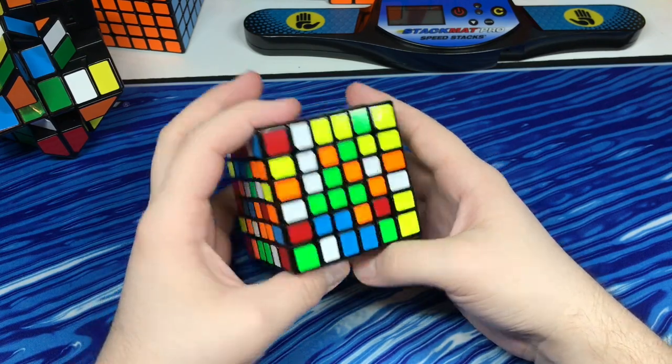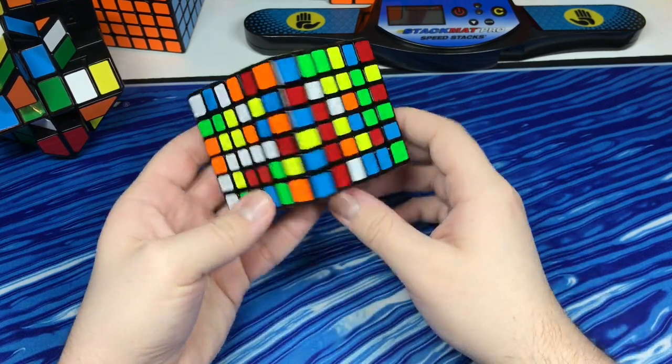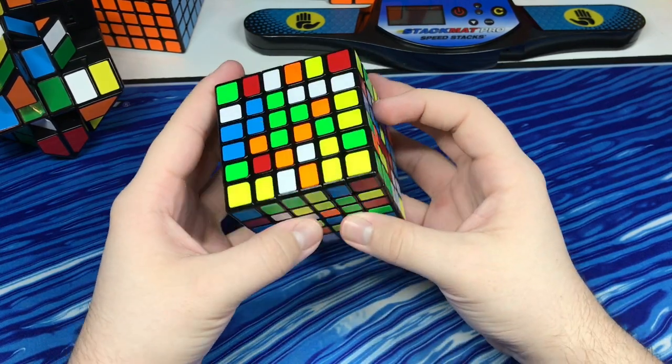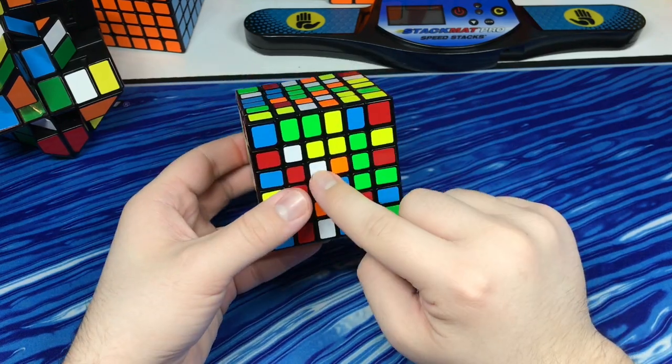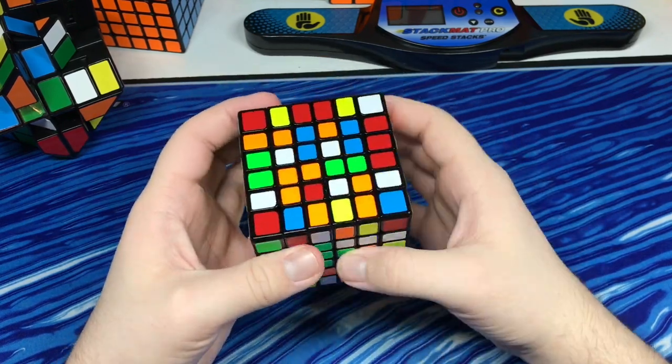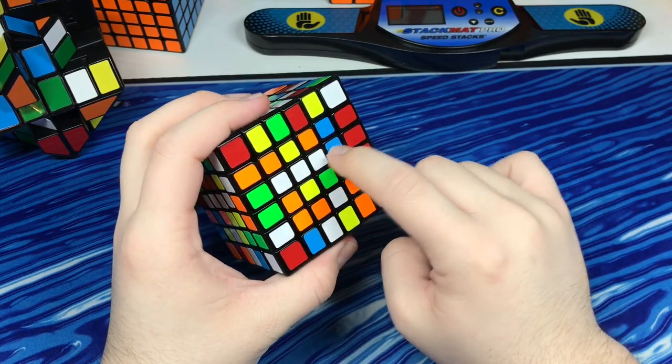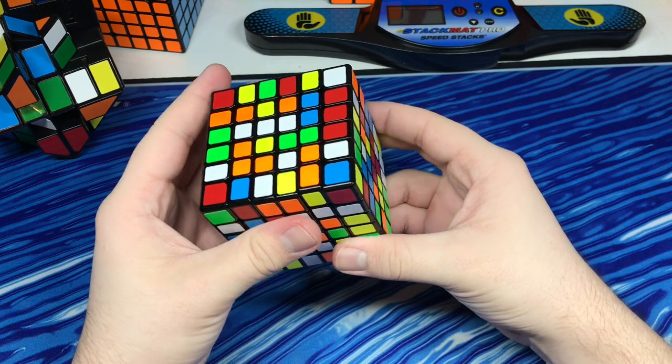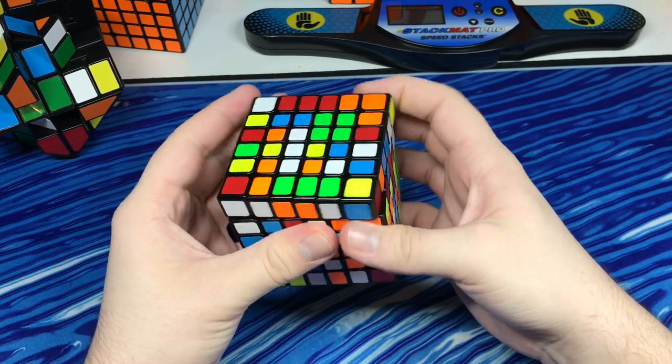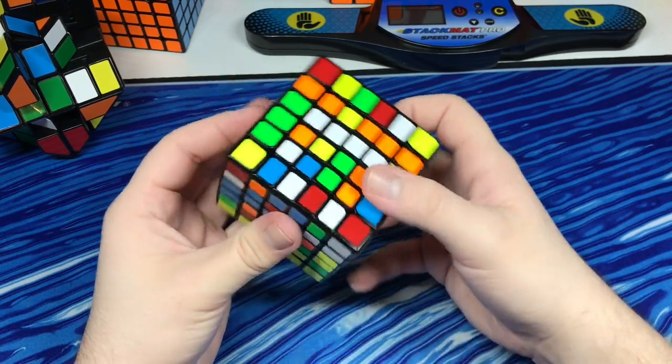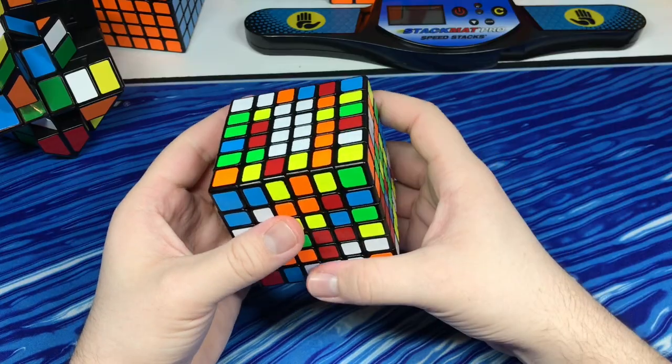So you want to look around the cube, you want to build these bars. For 6x6, that means like these little center pieces, you match them up, and then all we need now is this piece, which is right here. We can just move it up and then put it up.